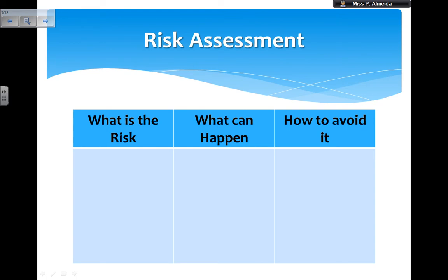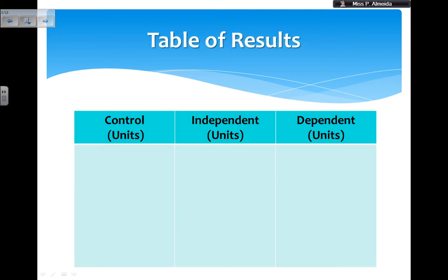Whenever you're doing a practical, you also need to assess the risks. You don't want to start without knowing what can go wrong and how to avoid it. A good way to do a risk assessment is to have a table where you name the risk, say what can happen and why that's a risk, and then how to avoid it. You can also add a column rating how likely or how dangerous the risk is.